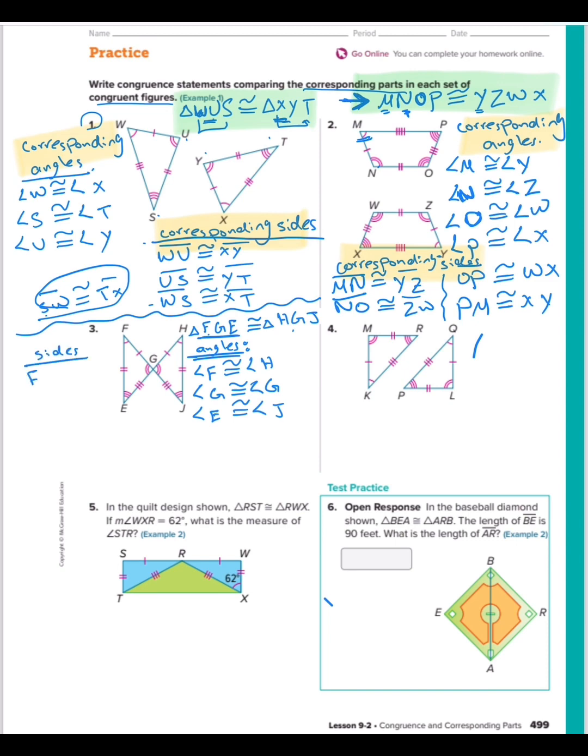Side FG is congruent to HG. Side must write, that's the line on top. Side GE congruent to GJ. The last one, EF is congruent to the side JH. And at the top right, the name of that triangle, so you don't miss the order.